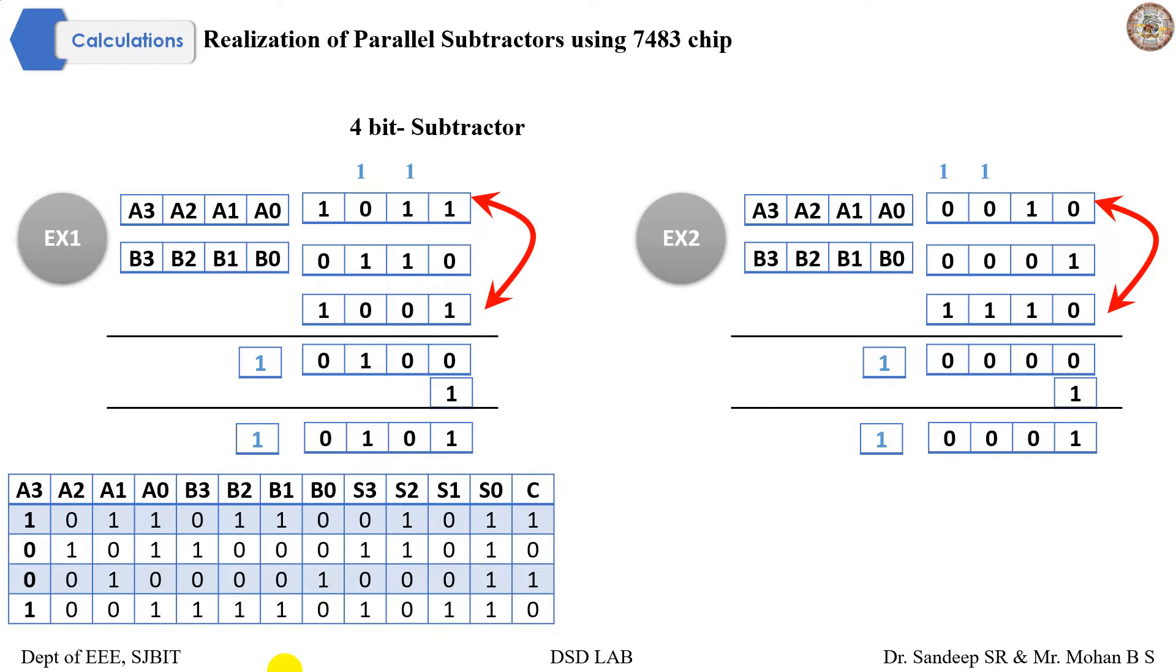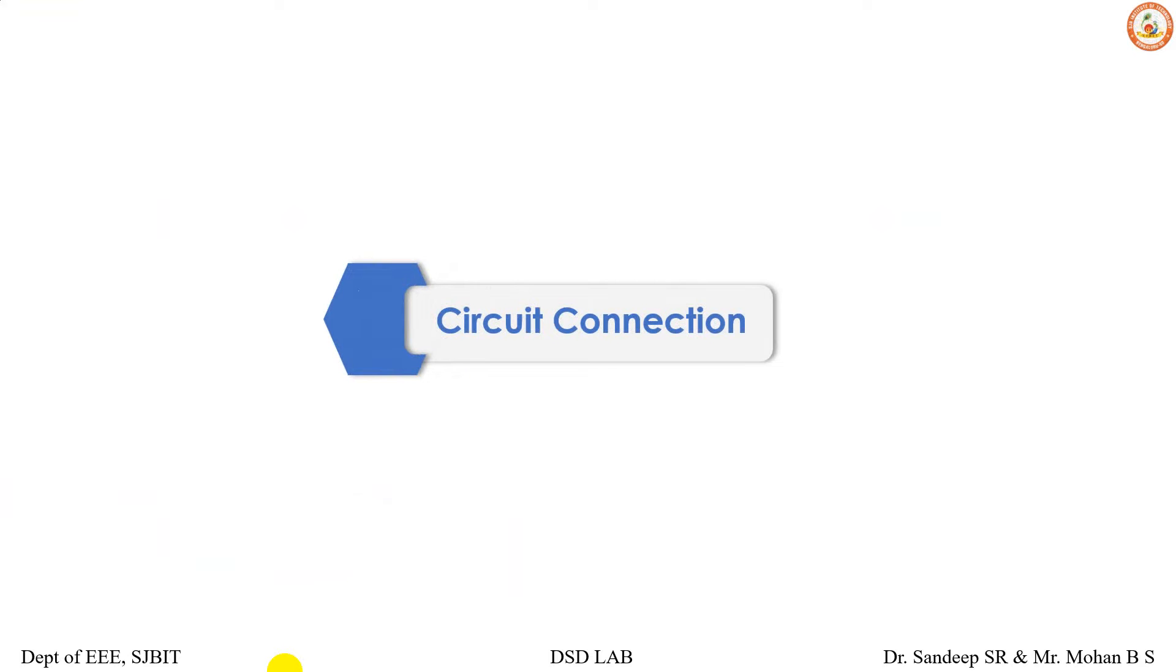This is our truth table. We can verify this. Any data, any 4-bit data can be taken and verify your output. Let's see circuit connections.